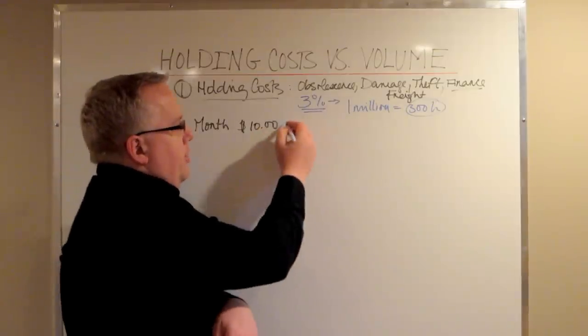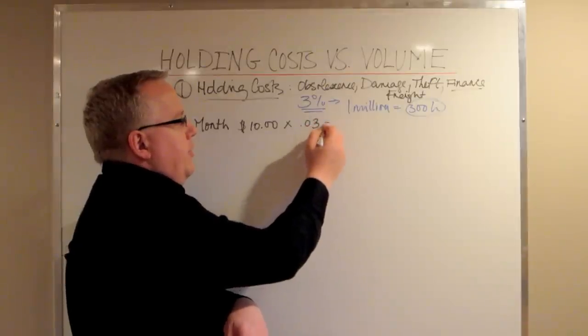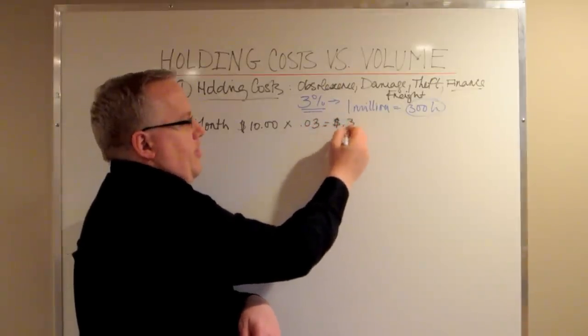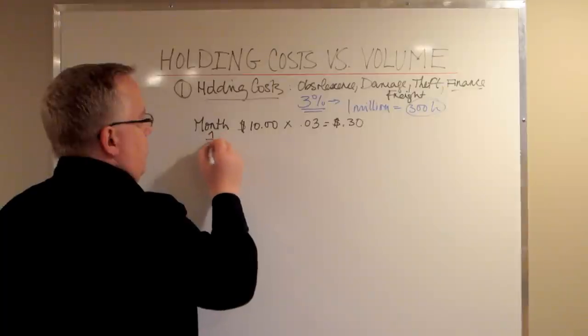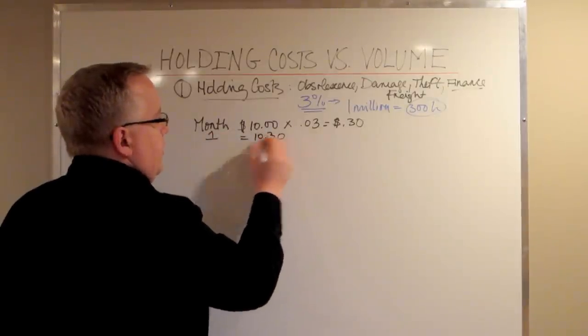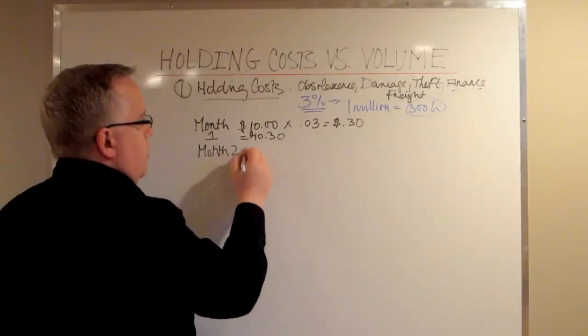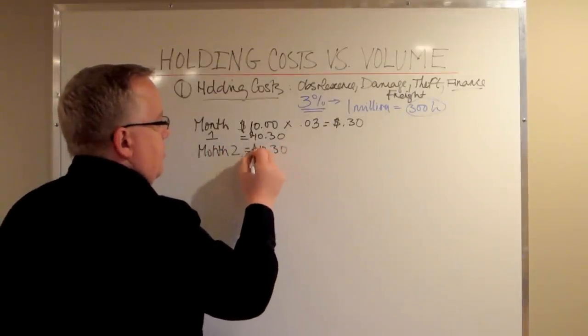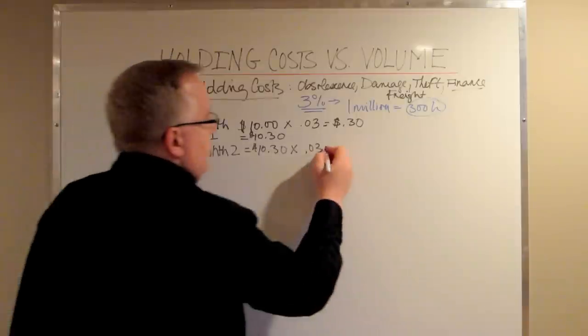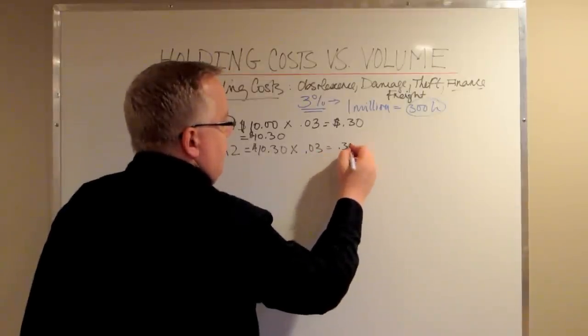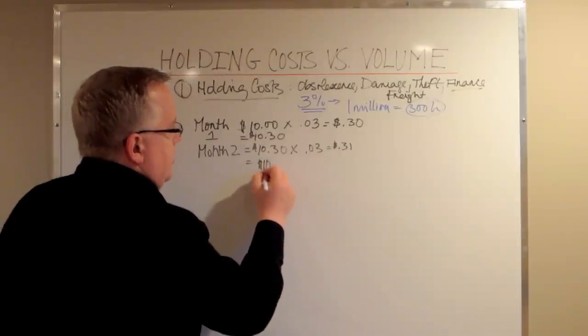If you hold it for one month, that's going to be $10 multiplied by 0.03, which is $0.30. So at the end of the first month, your cost at the end of month one is going to be $10.30. Now you're going to hold on to it for another month, so month two. That's going to be $10.30 multiplied again by 3%, and that's going to equal another $0.30 or $0.31. That's going to make your new cost at the end of month two $10.61.